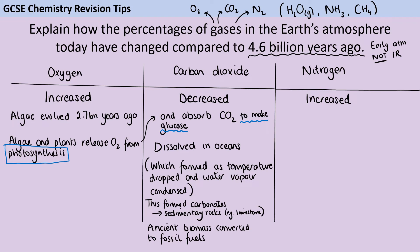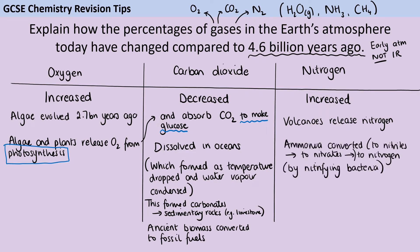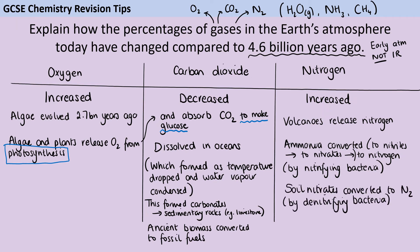Finally we have nitrogen to talk about. The big one you should know is that volcanoes released nitrogen, so all that volcanic activity increased the amount of nitrogen in the atmosphere. The other parts of the nitrogen cycle aren't explicitly in the GCSE specification, but you may have been taught them and you do get credit if you included them. You might have talked about ammonia being converted firstly to nitrites, then to nitrates, and eventually to nitrogen gas via nitrifying bacteria, or denitrifying bacteria which convert soil nitrates back into nitrogen gas.